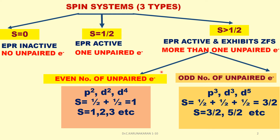For systems with S greater than one by two, there are two types: even number of unpaired electrons and odd number of unpaired electrons. For even number of unpaired electrons, examples include transition metal complexes with D2 and D4 configurations.